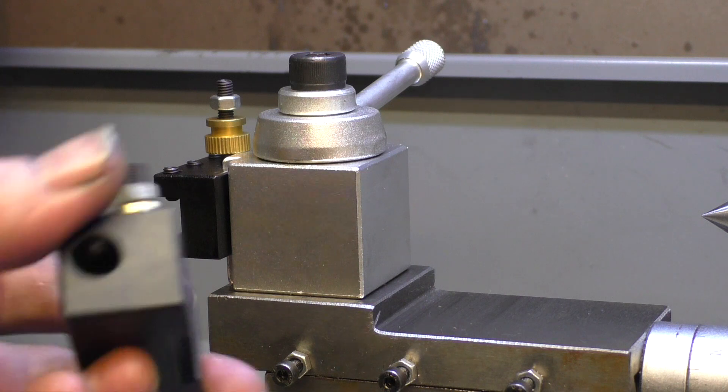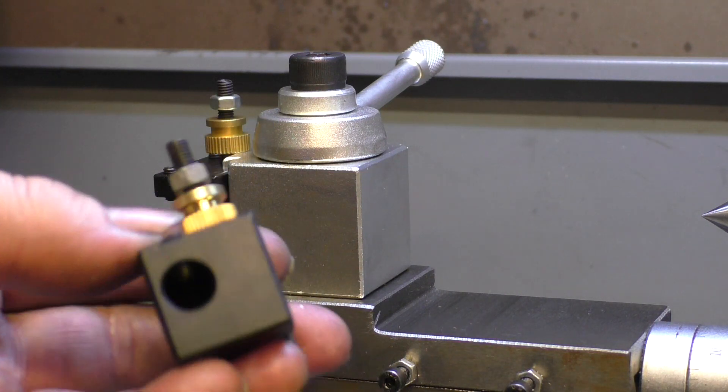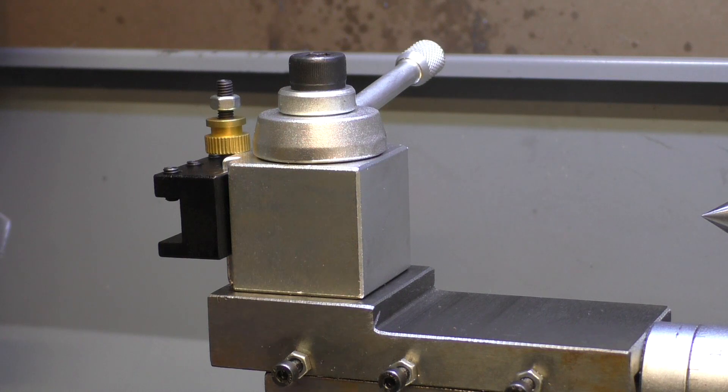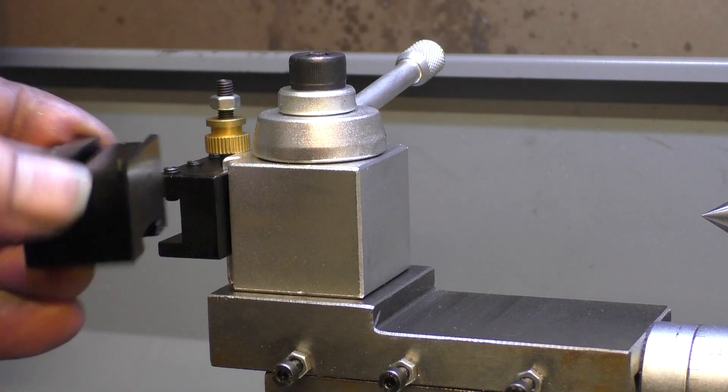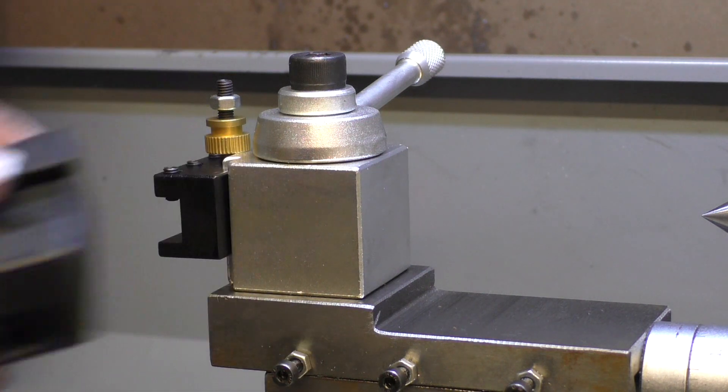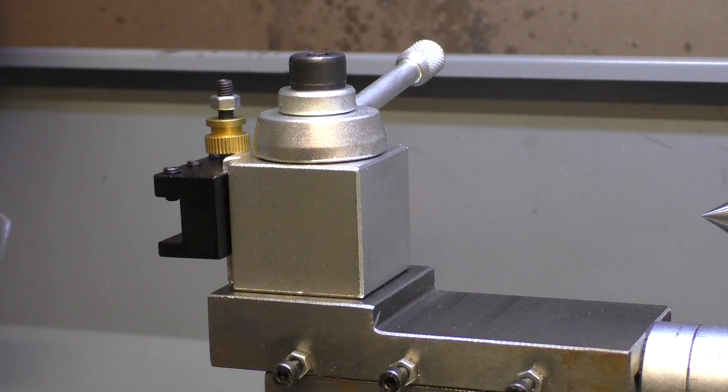I quite like this tool, this is the one supplied with it for the boring bar, that will come in quite useful. You only get two standard, so you might want to invest in a few more of these. You get a parting off tool version, as I just showed you, and the boring bar or internal threading, whichever you're doing.